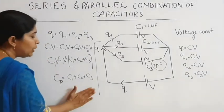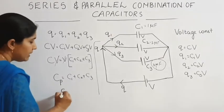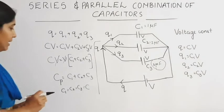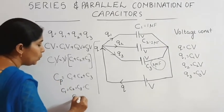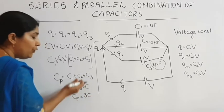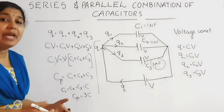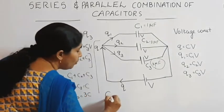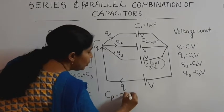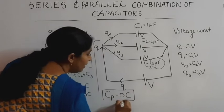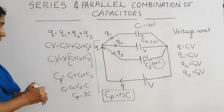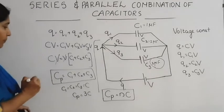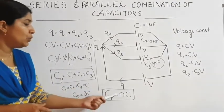If C1 equals C2 equals C3 equals C, then Cp equals C plus C plus C, which equals 3C. If 4 capacitors, Cp equals 4C. If N equal capacitors are there, the effective capacitance is N into C. In parallel combination, effective capacitance equals NC if all capacitors have the same value.